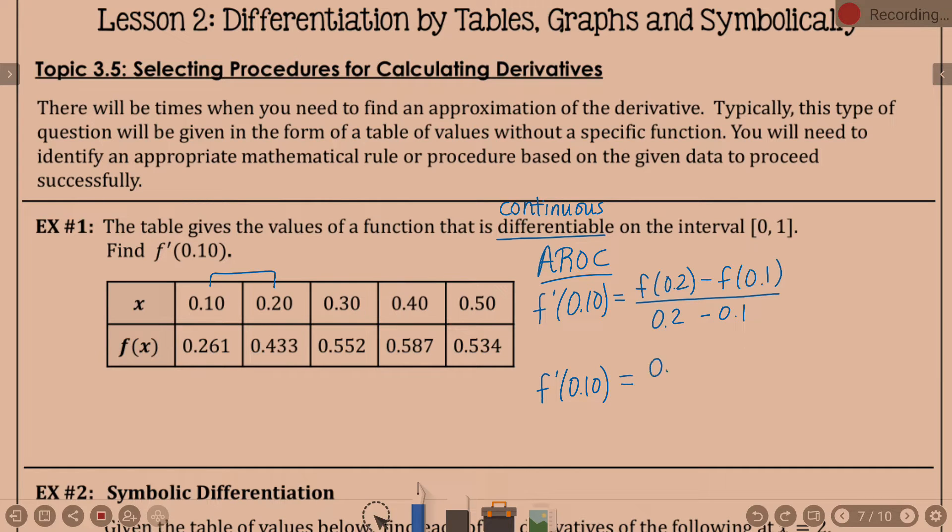Now, let's do a little math. f of 2 tenths is .433 minus f of 1 tenth, .261, over the 2 tenths minus 1 tenth, which is 1 tenth. .433 minus .261, .172 divided by .1, what is .172 divided by .1? 1.72. Dividing by that 1 tenth will move that decimal 1 to the right there. Got it? There's an example of trying to find a derivative based on a table.